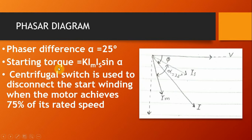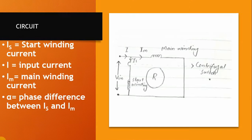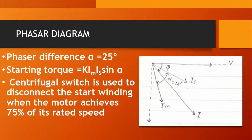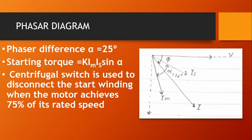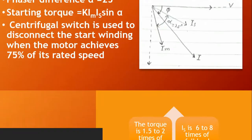The starting torque can be calculated using this formula. As you can see in this circuit, we use a centrifugal switch to disconnect the starter winding when the motor achieves 75% of its rated speed.